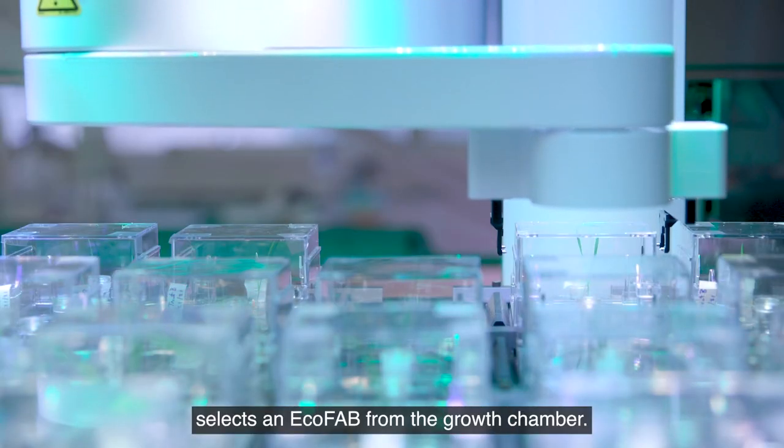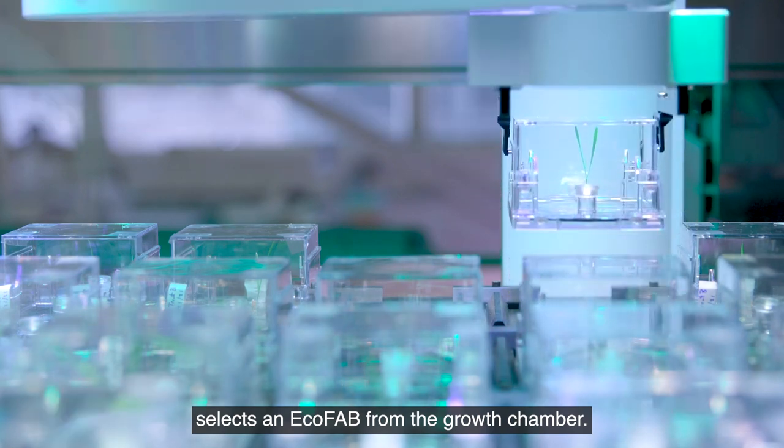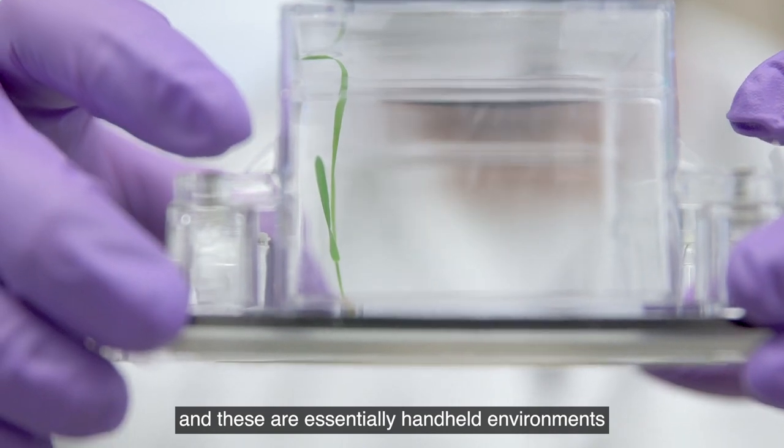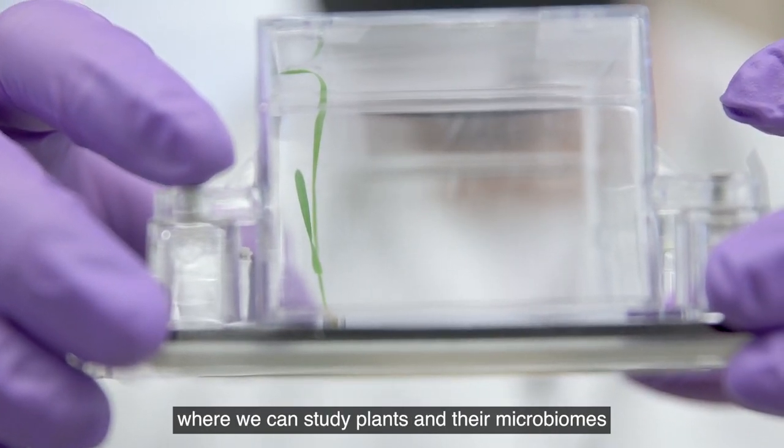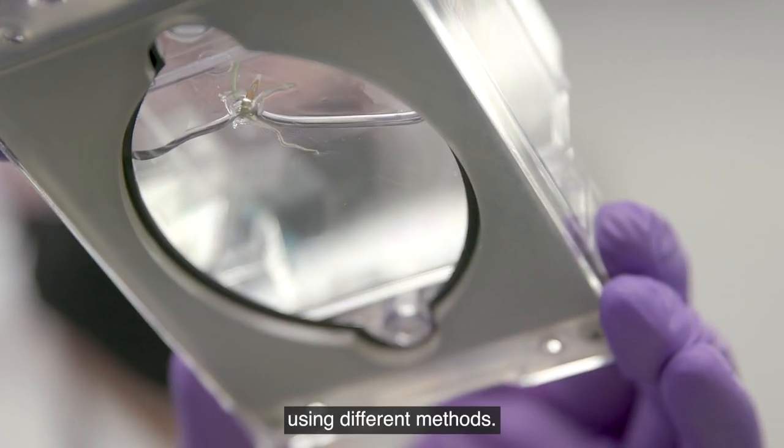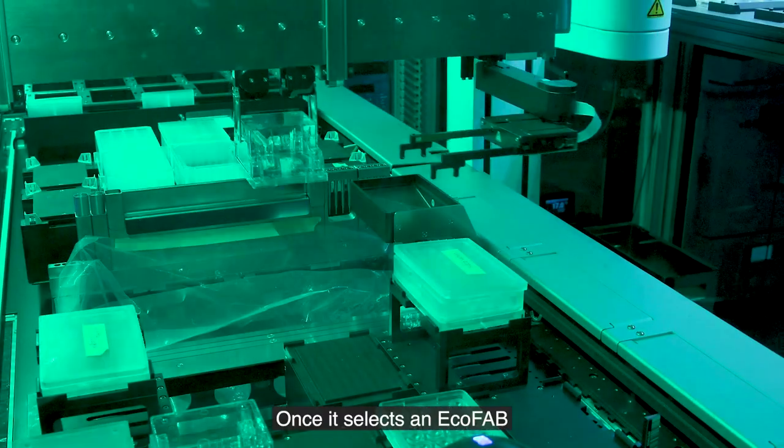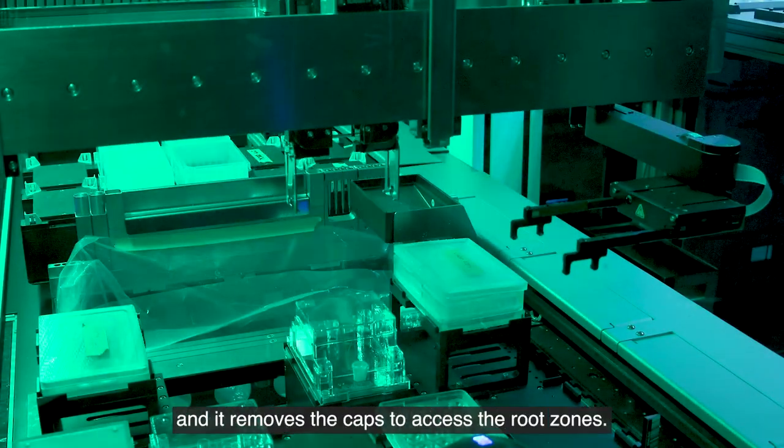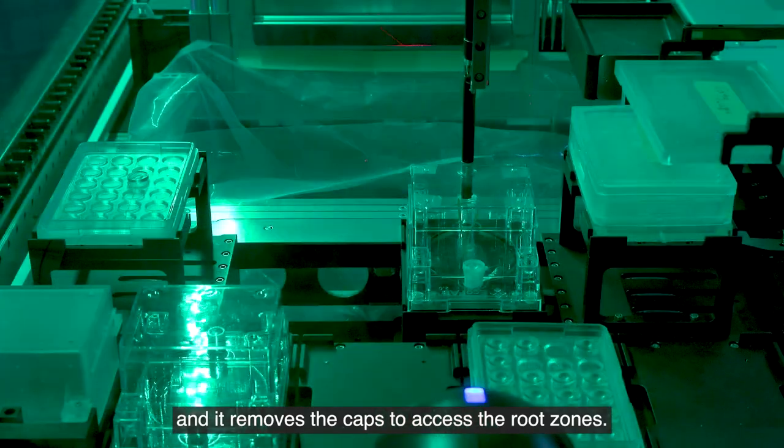First, the ECOBOT selects an ECOFAB from the growth chamber. ECOFAB stands for fabricated ecosystem, and these are essentially handheld environments where we can study plants and their microbiomes using different methods. Once it selects an ECOFAB, it delivers it to the liquid handling unit and removes the caps to access the root zones.